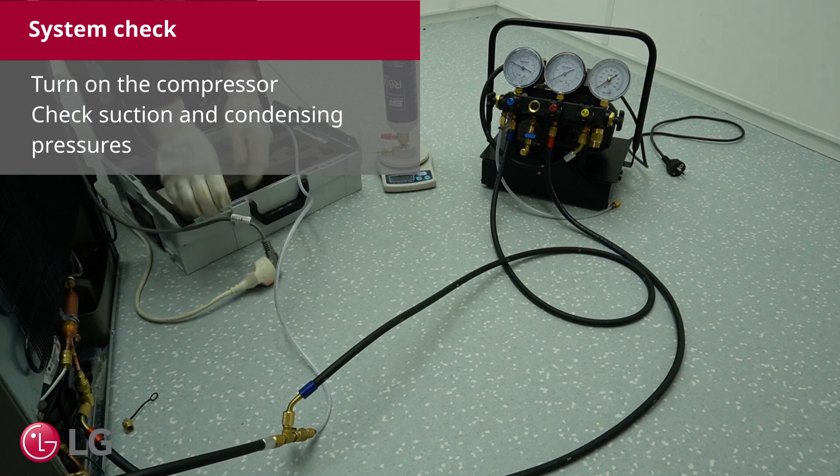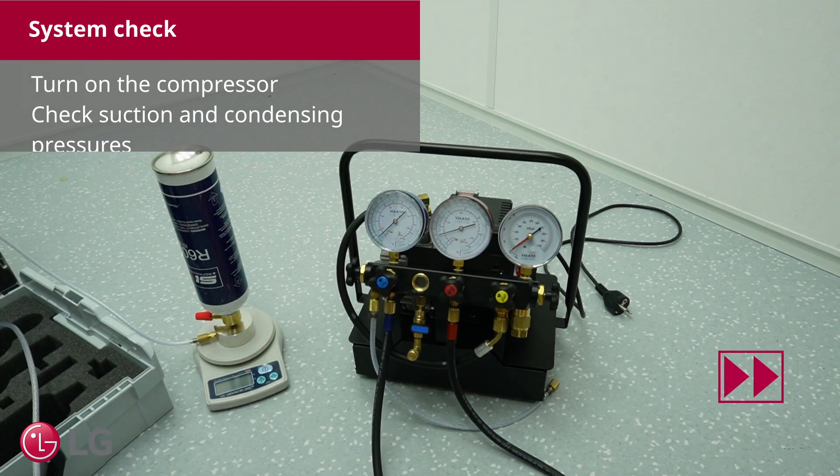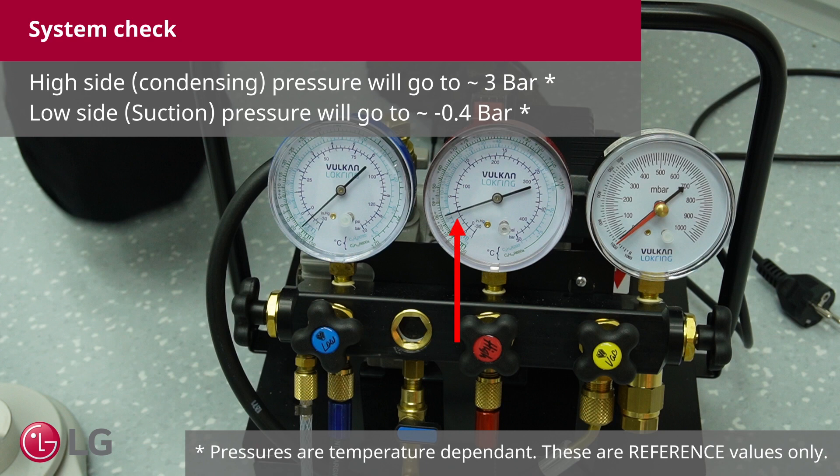Turn on the compressor. Check the suction and condensing pressures. The high side pressure will go to roughly 3 bar and the low side pressure to roughly 0.4 bar. The measured values highly depend on the ambient temperature.